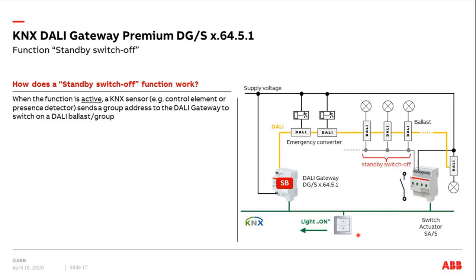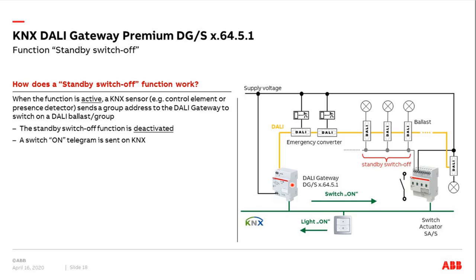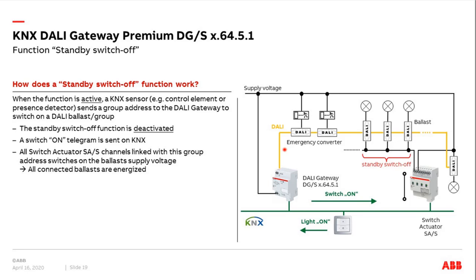Next day or next morning, we enter the building, the presence detector or someone presses the control element. We send a telegram to switch on lights — for example, group number 5 or ballast number 20. What happens first: the standby function is deactivated and the DALI gateway sends a KNX telegram with the logical value one. The switch actuator closes the relay and all the ballasts are now energized. After a delay time set in the gateway — typically one second, maximum up to ten seconds — all ballasts are ready for operation.